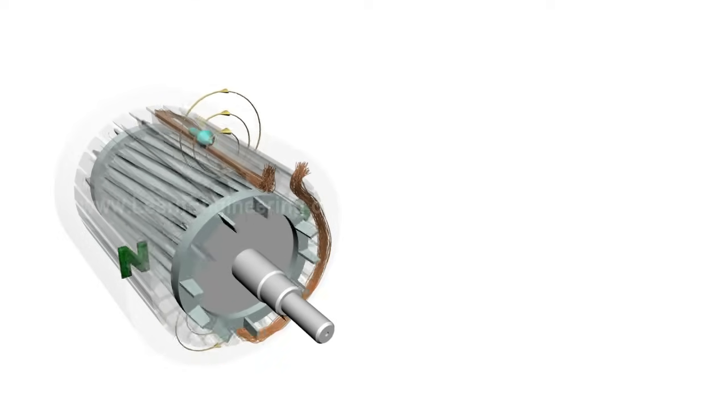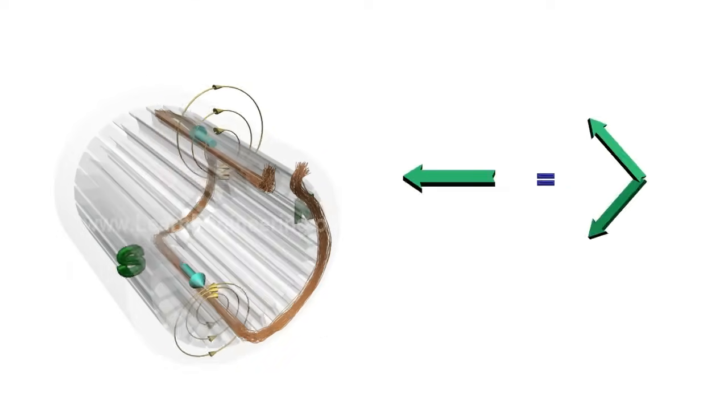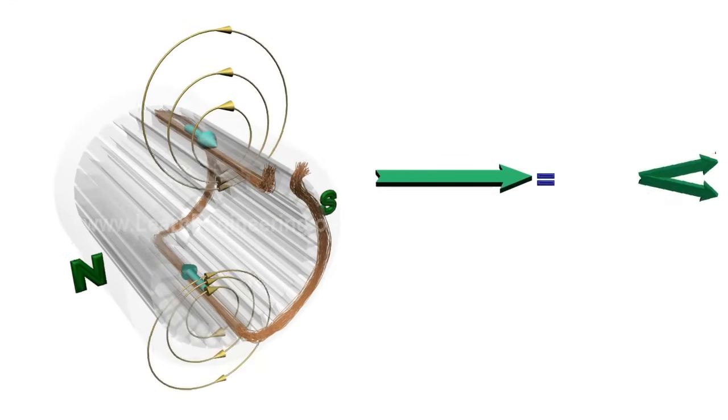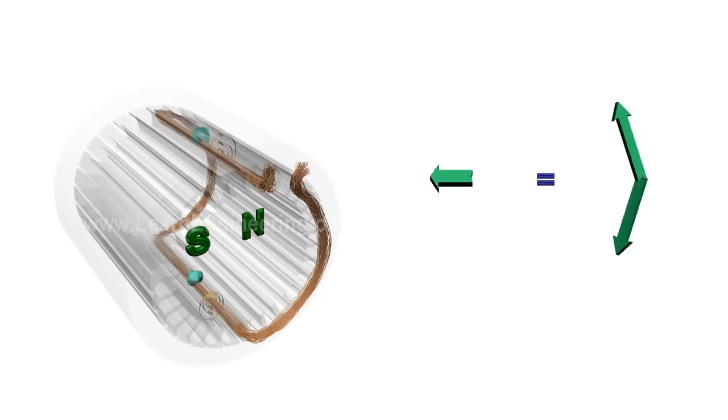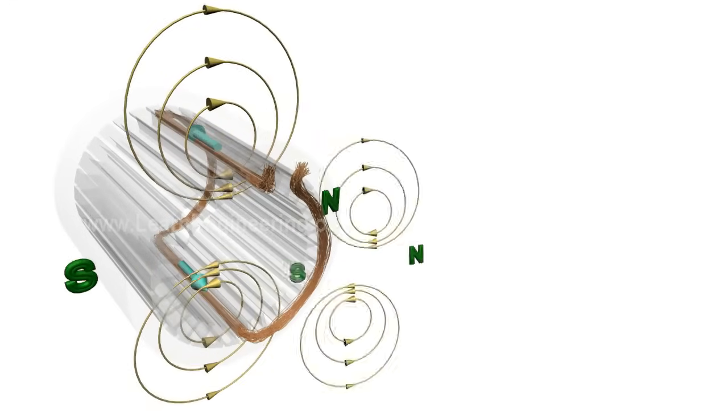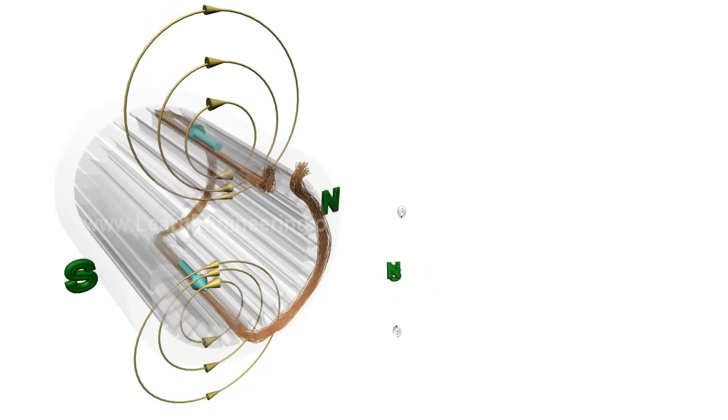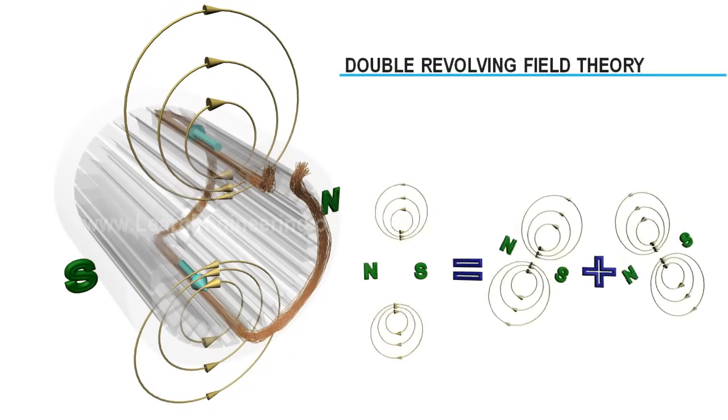The reason is as follows: the fluctuating field is equivalent to sum of two oppositely rotating magnetic fields. This concept is known as double revolving field theory.